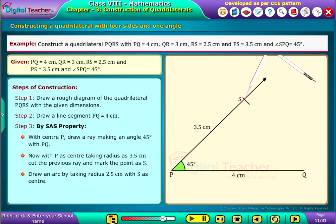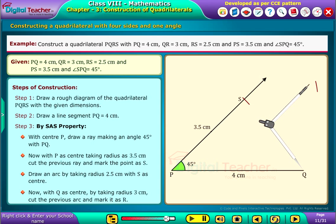Draw an arc by taking radius 2.5 cm with S as center. Now, with Q as center by taking radius 3.5 cm, cut the previous arc and mark it as R.